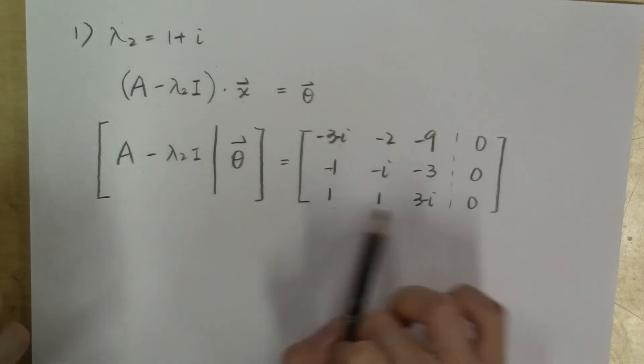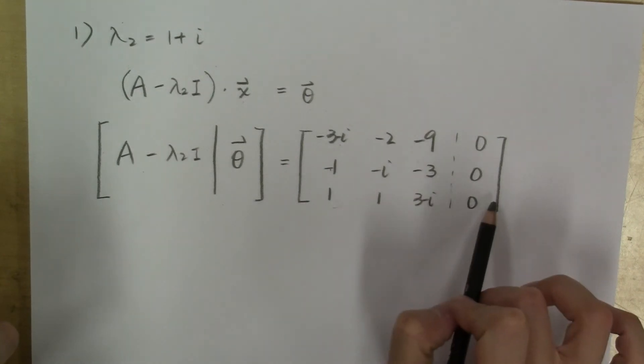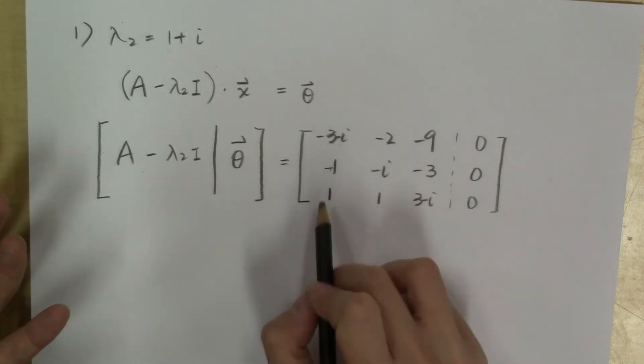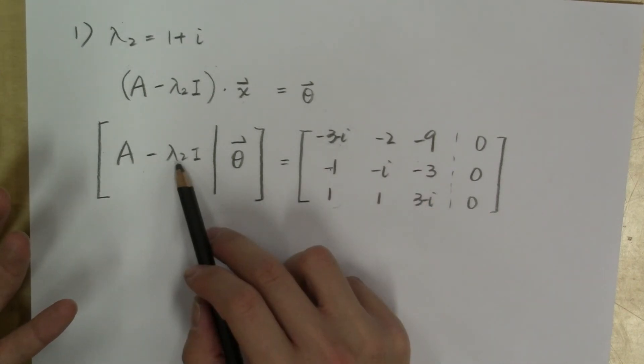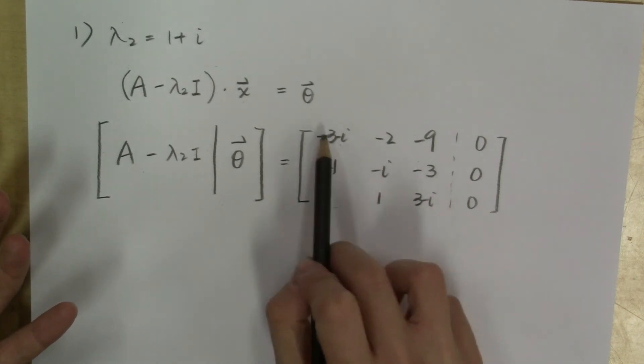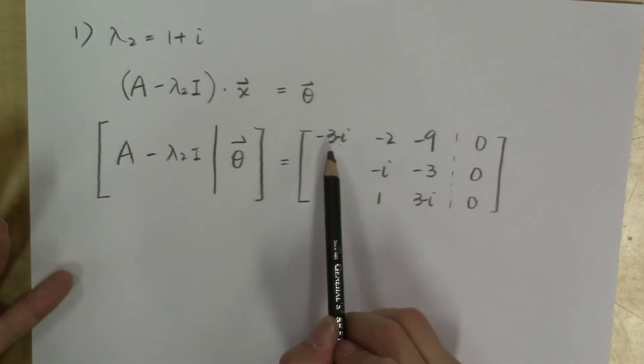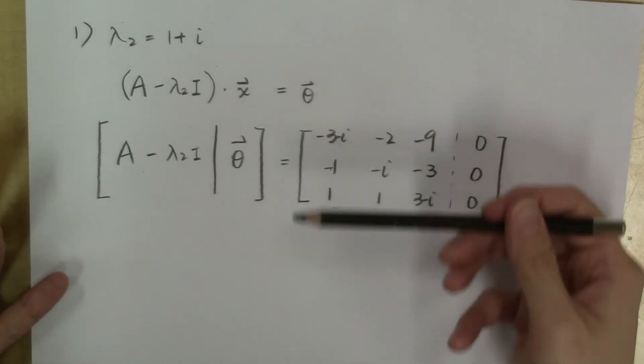So one easy way to do that is to simply switch the first row with either the second row or the third row. Because you were originally given a real matrix, and this matrix is obtained by subtracting a complex eigenvalue from only the diagonal entries, you will always have real numbers below the diagonal line. So you can always make sure the entry in this position is real by switching the rows.